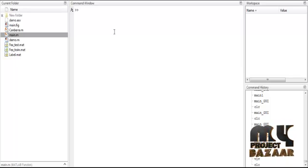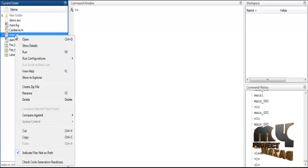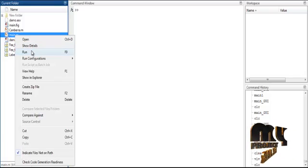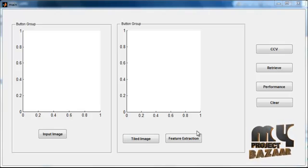Now we discuss the initial running procedure for the process. Select the main.m file and right click in that file. Then select the third option run. Now the initial GUI window was opened. In that you can see several buttons known as the push buttons. These two axes are represented as an axis.